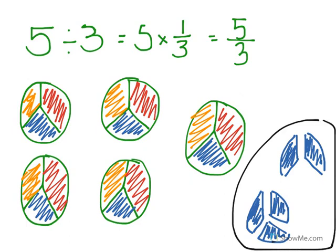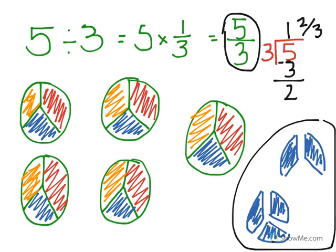We also could have done that mathematically, because we see here that we have an improper fraction and we know how to change that. If I changed it by dividing the numerator by the denominator, I would have gotten 1 and 2 thirds pizzas.